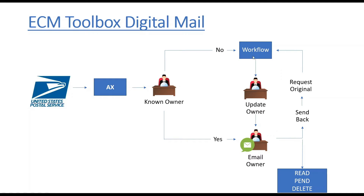If the owner is unknown, it goes over to the workflow system so a person can review and determine who should be the owner. From there, they update the owner and that person receives an email that mail is available. While reviewing the mail, you can choose to send it back or request to have the original sent to yourself — that moves over to the workflow solution. The other choices are to mark it as read, pending, or delete. Later when you look inside Application Extender at your mail, you'll see a status, and if you marked delete, you won't see it anymore.